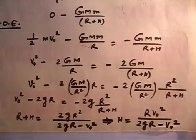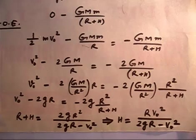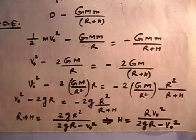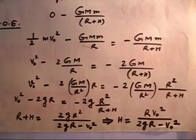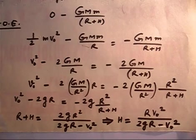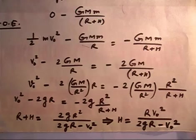Two important points in this problem: first, the object is thrown from the pole with velocity directed along the axis, so there is no tangential component of velocity. Second, potential energy at the surface is not zero — it is -GMm/R — so you must include it. If thrown from elsewhere, you would also need to account for a tangential velocity component.